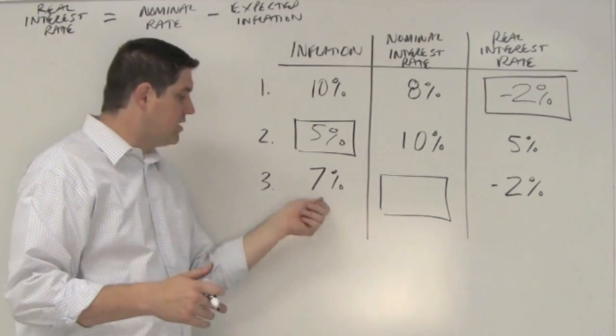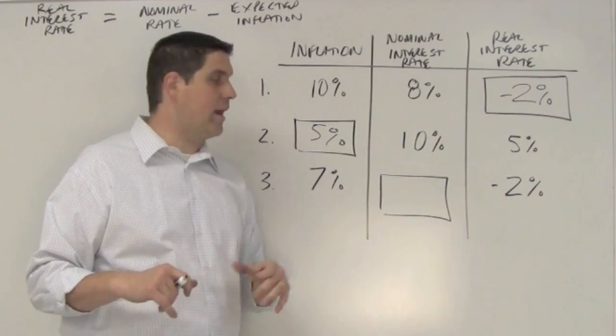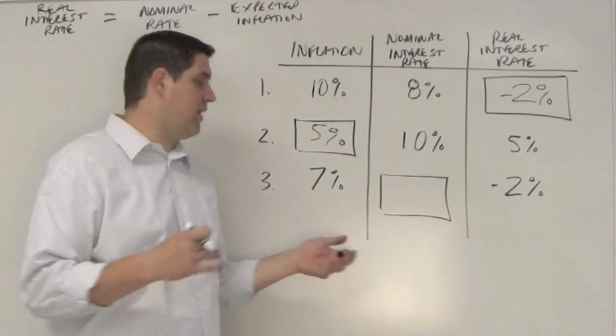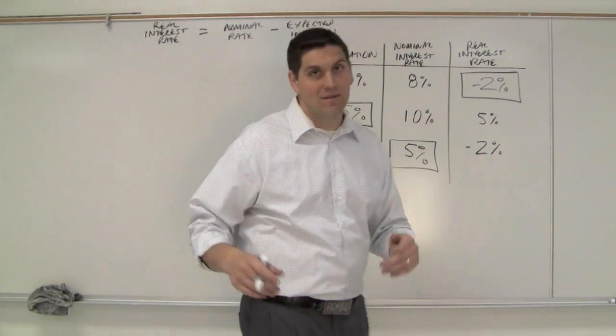You lent out money to somebody for a certain rate, and prices have gone up 7%. The result is your actual real interest rate ended up being only negative 2%. The question is, how much is that nominal rate? The answer, 5%. Hopefully that makes sense. Until next time.